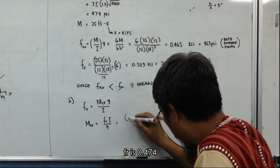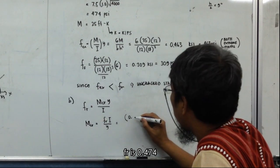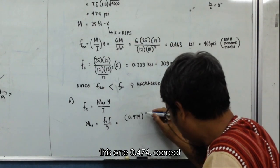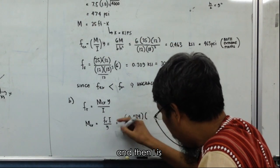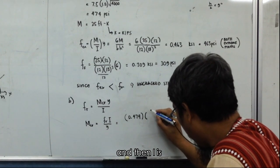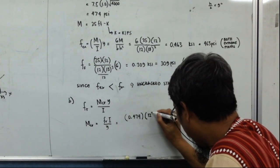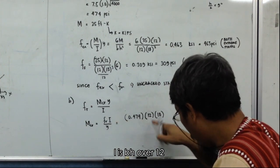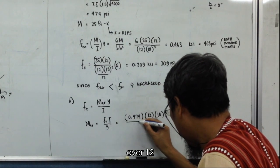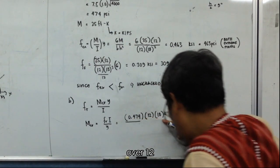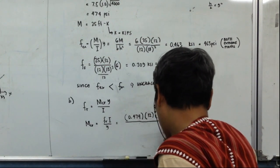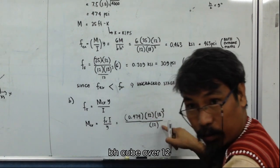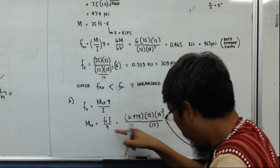We can again verify. We need to verify another one. Verification is this: F_R is 0.474. 0.474 correct. And then I is what? BX cube over 12. I is BX cube over 12, over 12, so over 12. I is BX cube over 12.